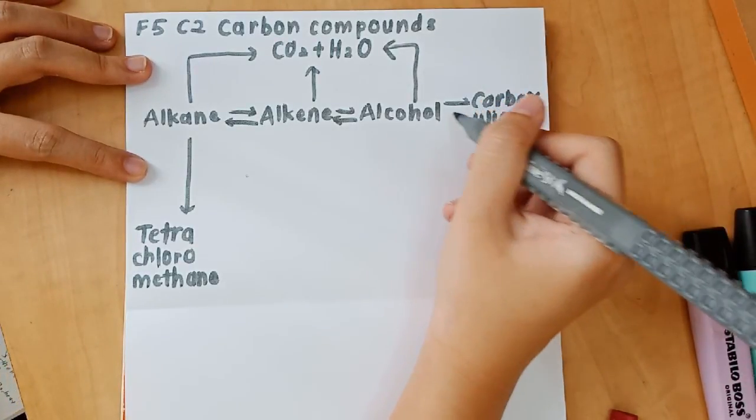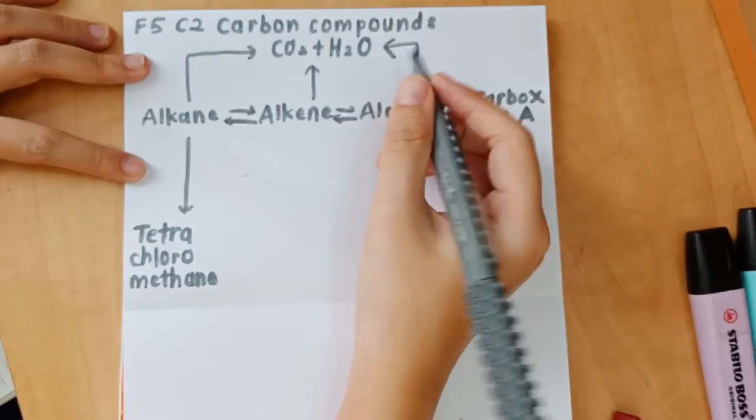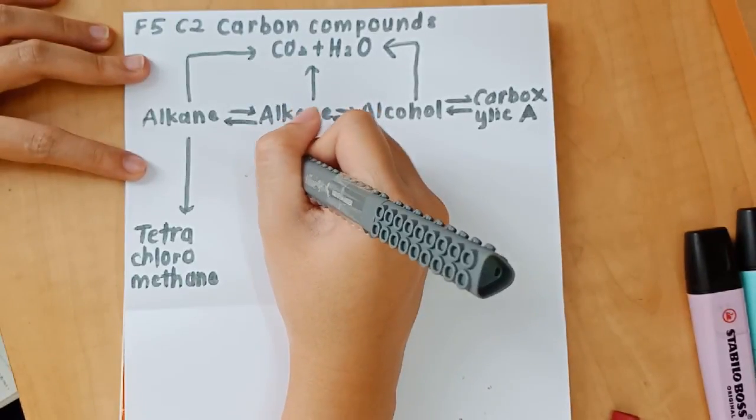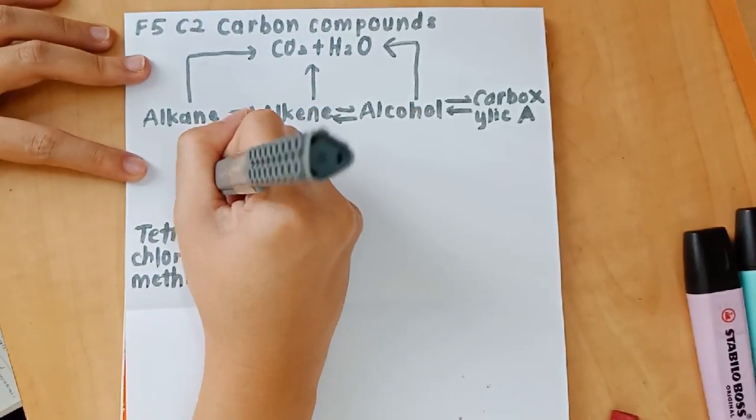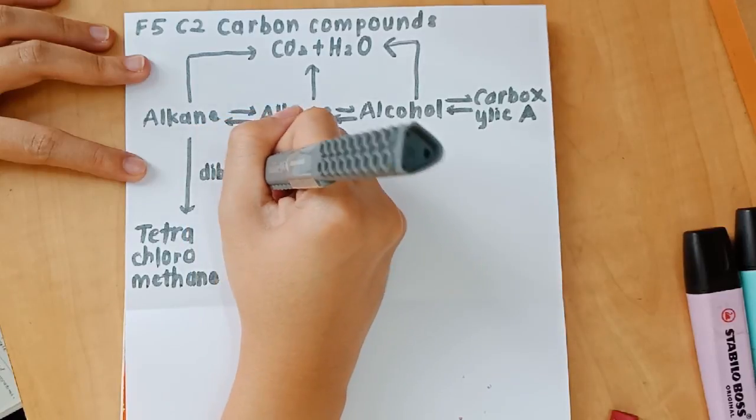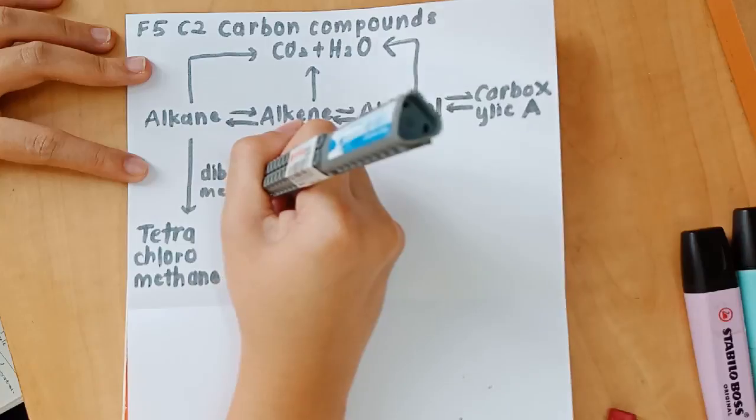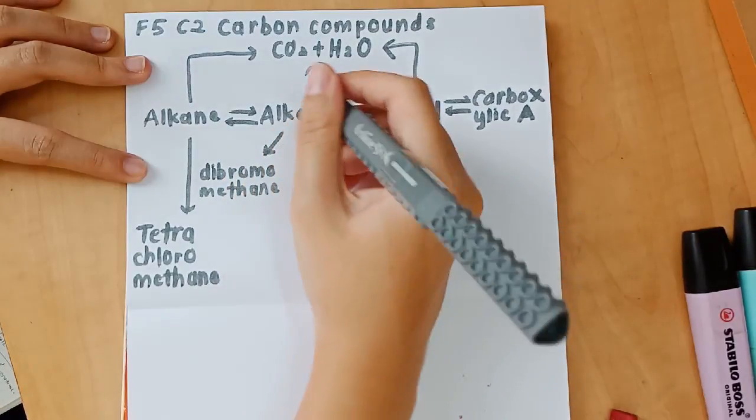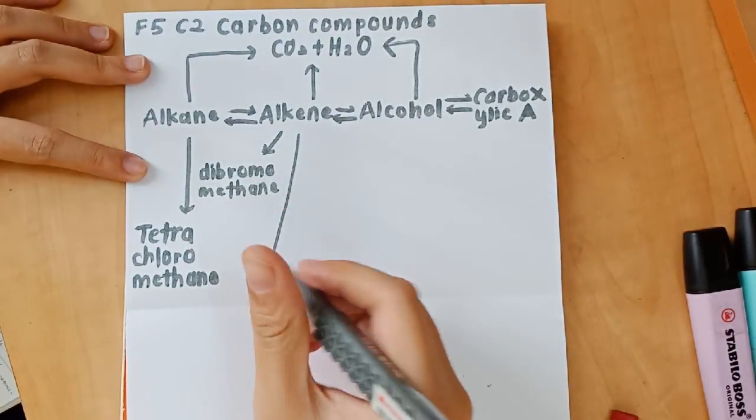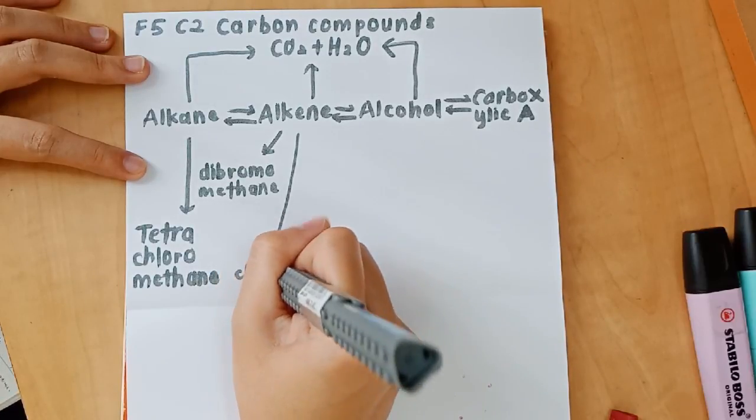And then, because there are reactions to convert alkane to alkene, and then alkene back to alkane. So I'm drawing arrows, like bidirectional arrows. And then from alkene, I'm drawing an arrow ending in dibromomethane. Because dibromomethane is a product.